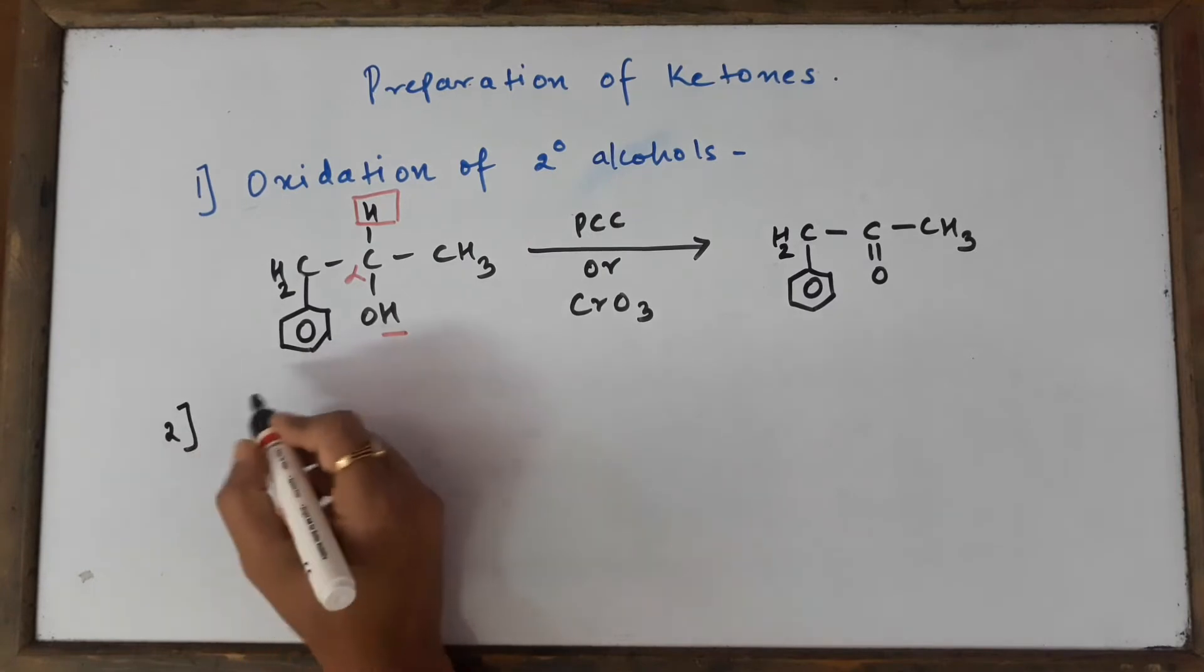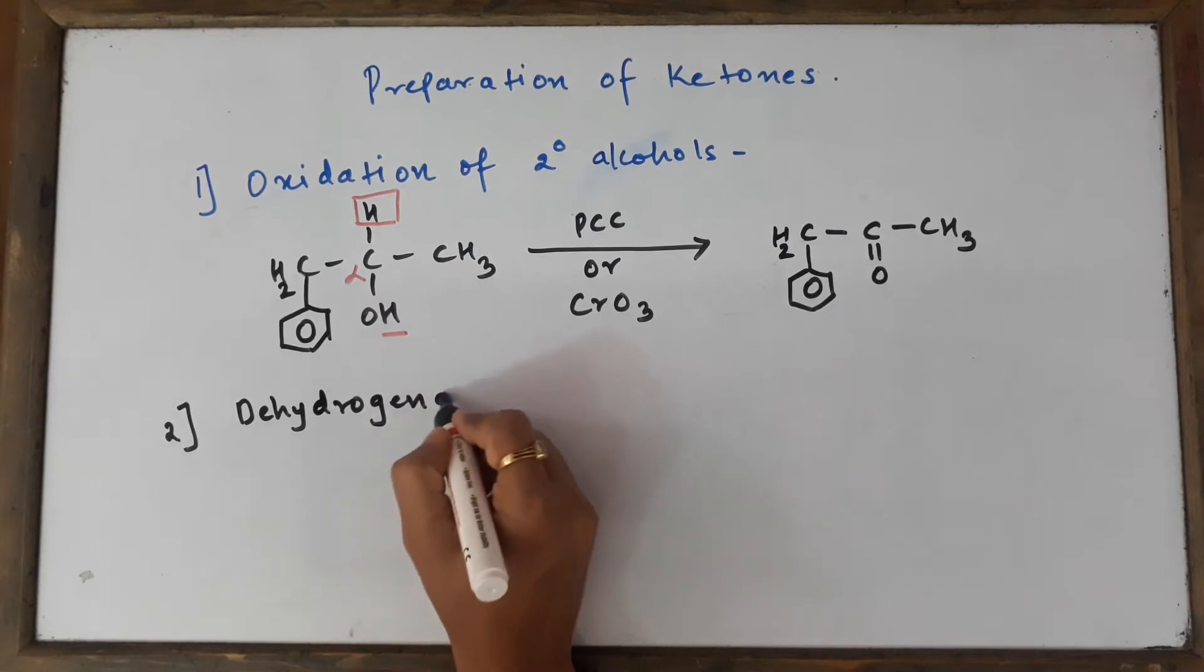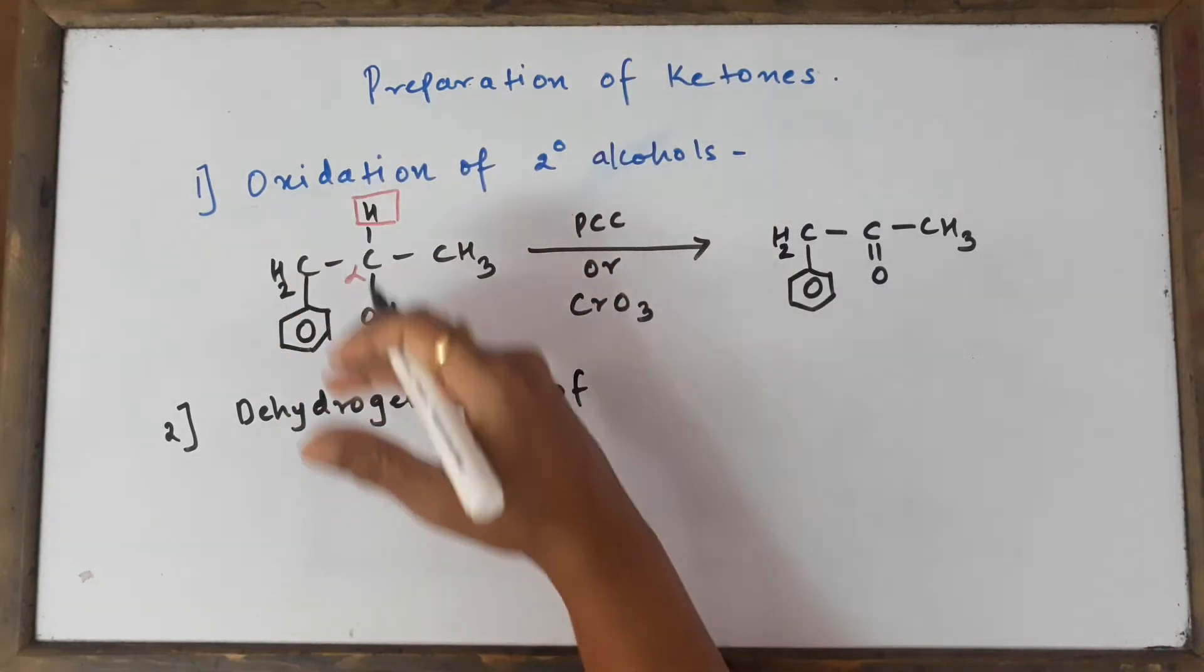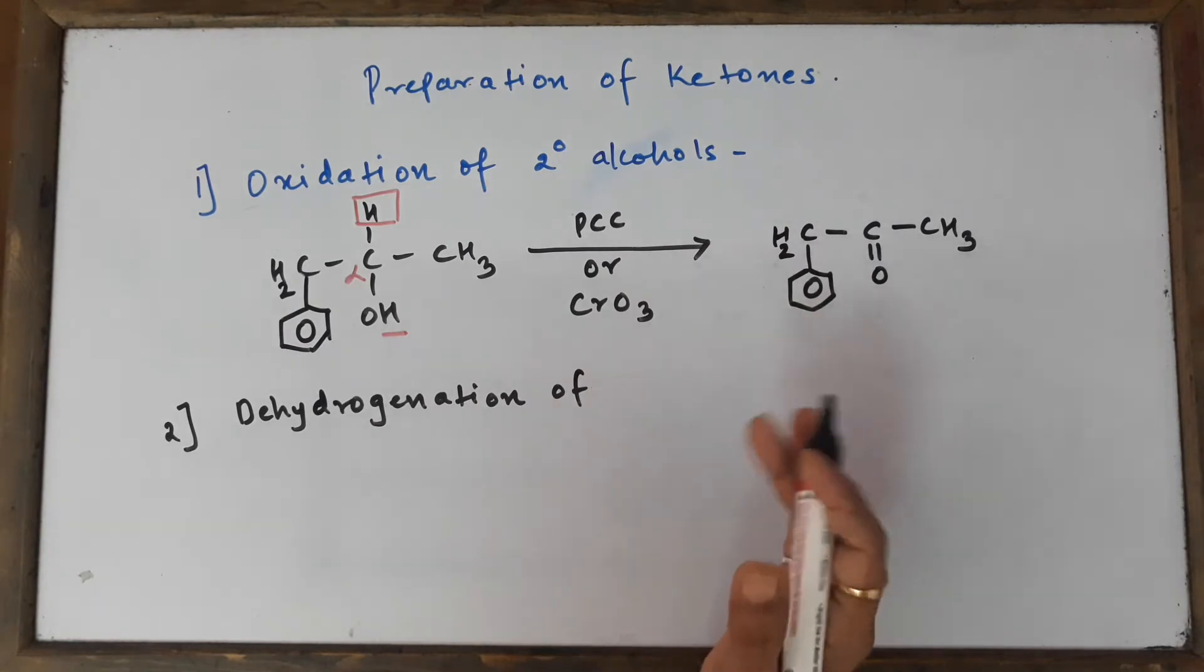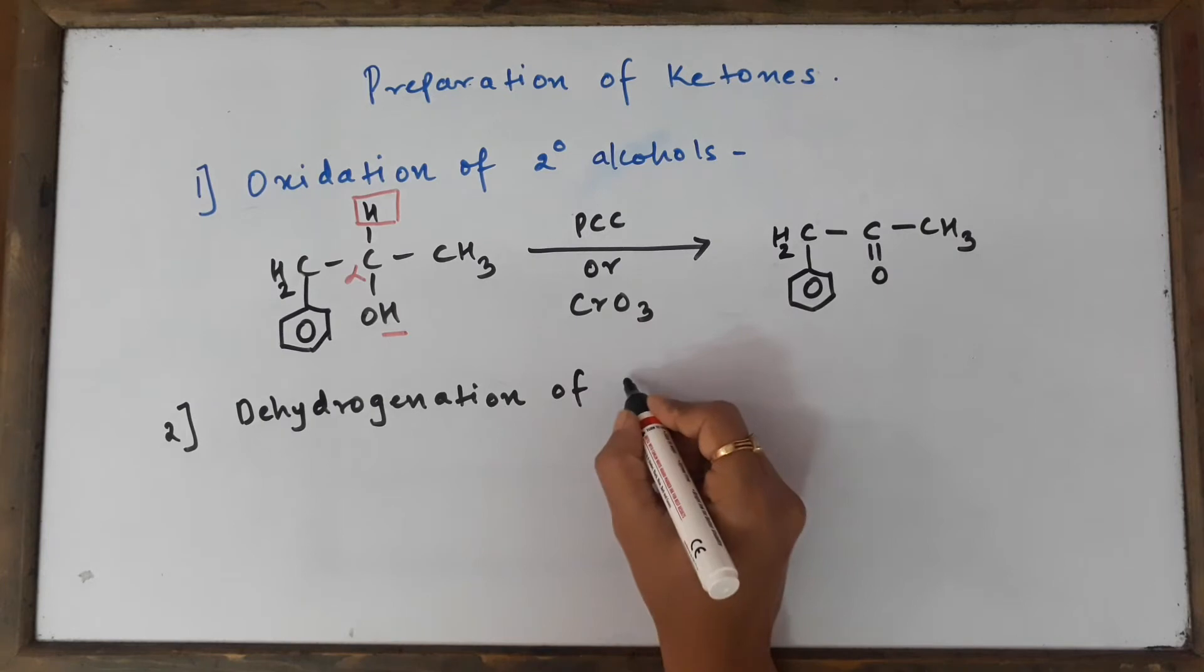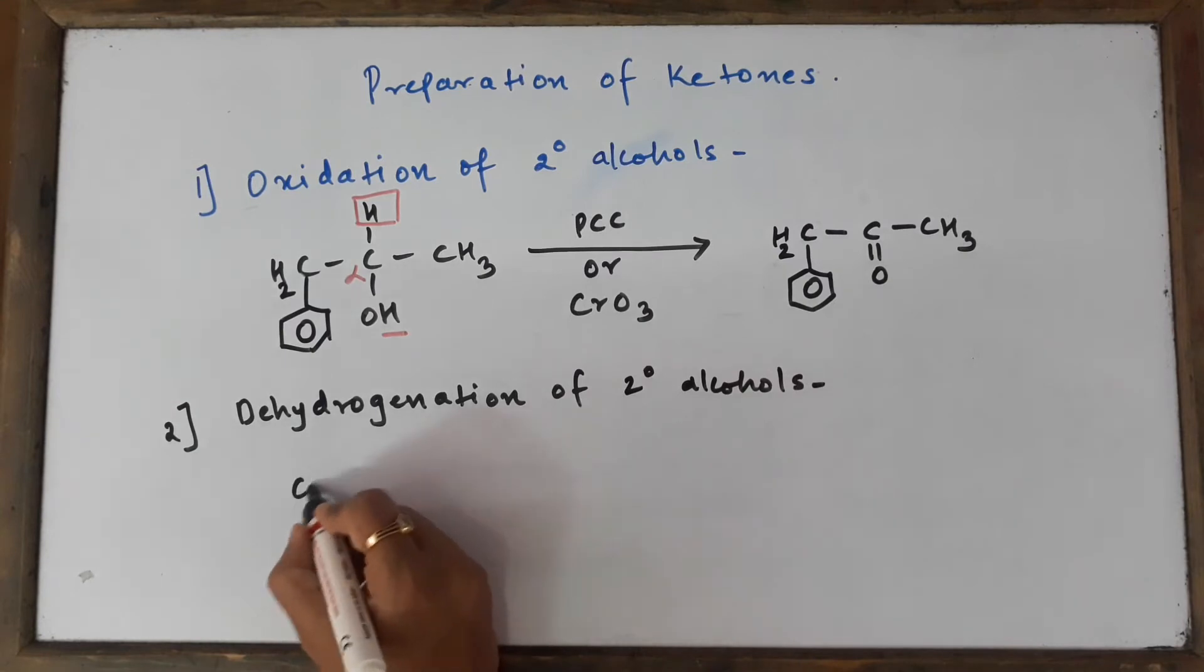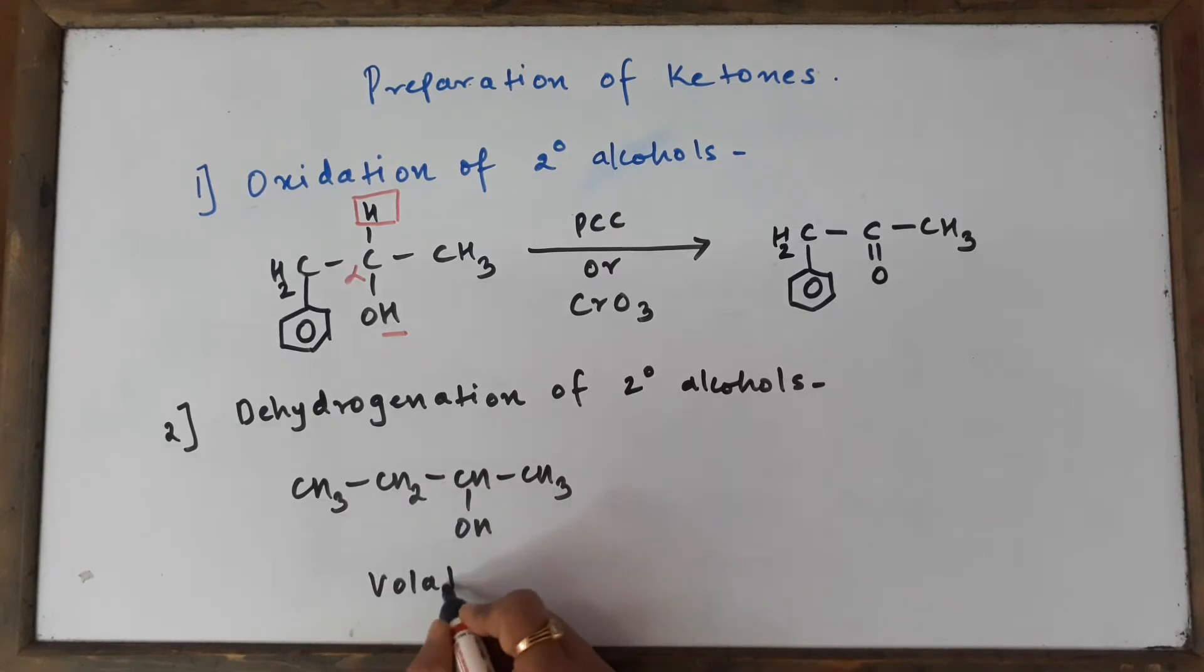The second method is dehydrogenation of secondary alcohols. It's more or less the synonym of oxidation—both are the same. Dehydrogenation means removal of hydrogen; removal of hydrogen means oxidation. Once again, you can take any secondary alcohol of your choice. For example, I'm taking butane-2-ol (one, two, three, four carbons).